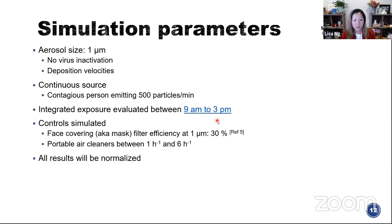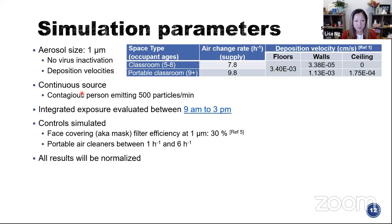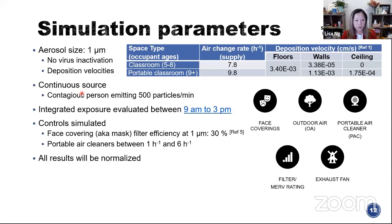We looked at an aerosol size of one micron. We did not look at virus inactivation, mostly because data is not yet out on how UVGI may affect this virus. We did look at deposition velocity and assumed a contagious person emitting 500 particles per minute as the constant source in FATIMA. We assumed an integrated exposure between 9 AM and 3 PM — a typical time children would be in school. Controls studied included face coverings for both the person being exposed and the contagious person.